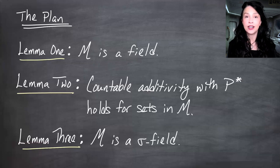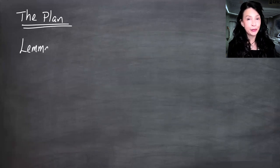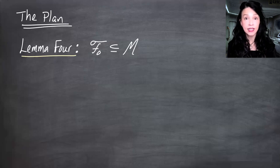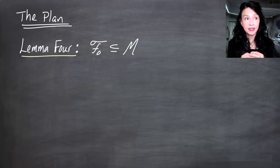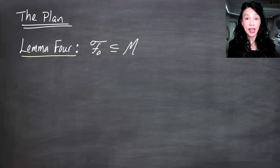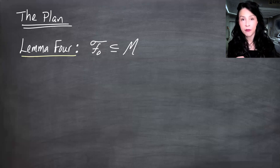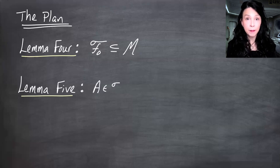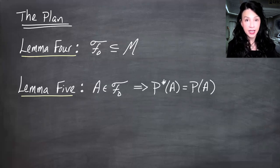Lemma four: we're going to prove that F-naught, our original field, is contained in M. That tells us that for all sets in F-naught, P-star of (A intersect B) plus P-star of (A-complement intersect B) equals P-star of B for all A in F-naught and all subsets B of omega. Lemma five: we'll finally prove that P-star is in fact the same as P for sets in F-naught. And in lemma six, we'll prove that P-star is in fact a probability measure on the sigma field curly M.